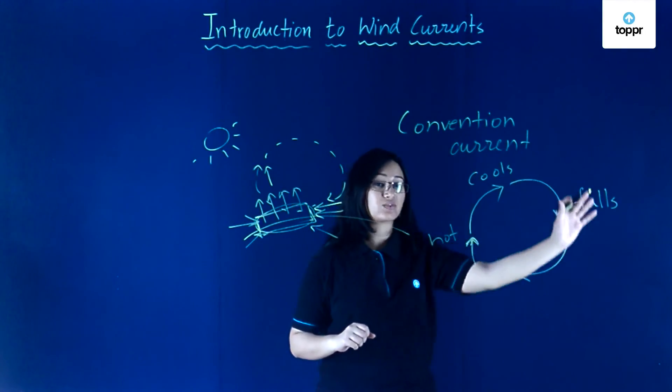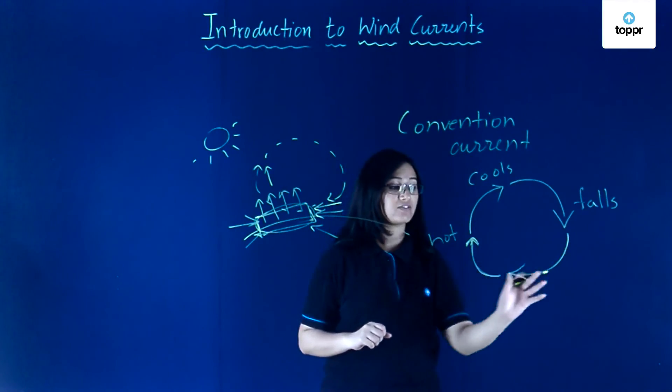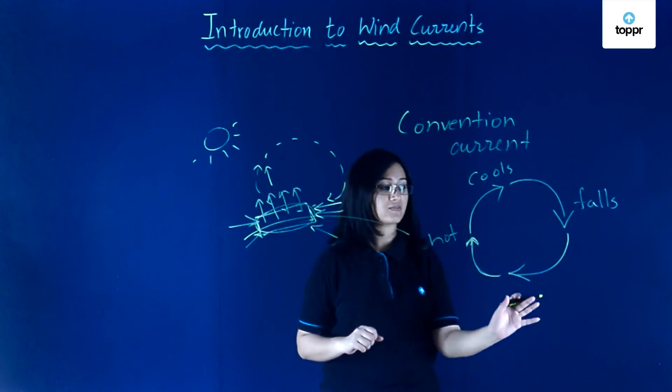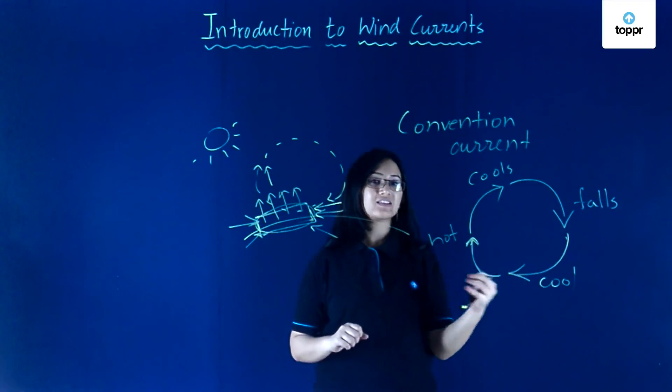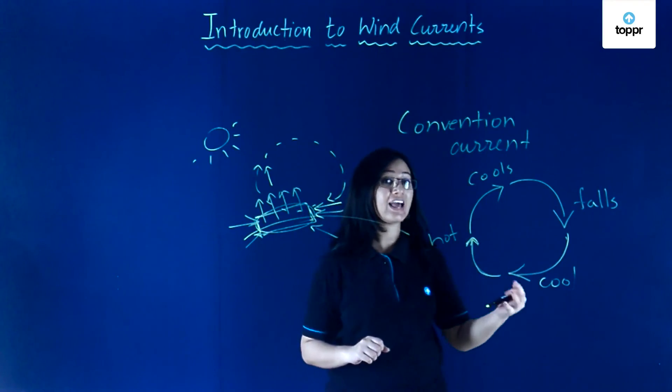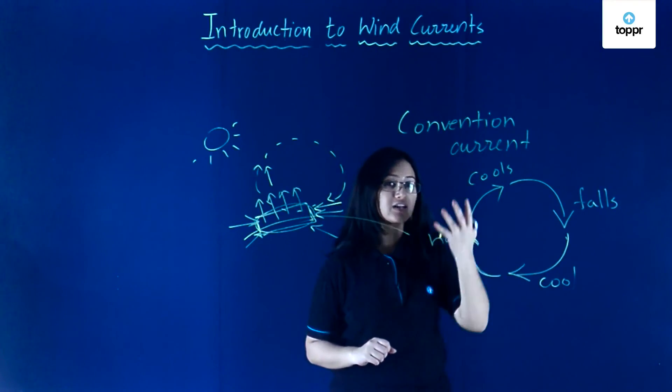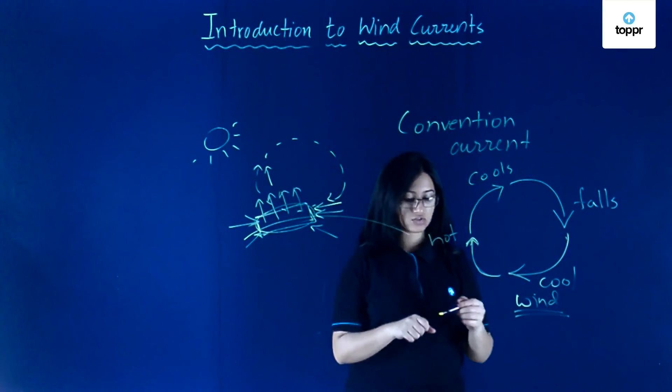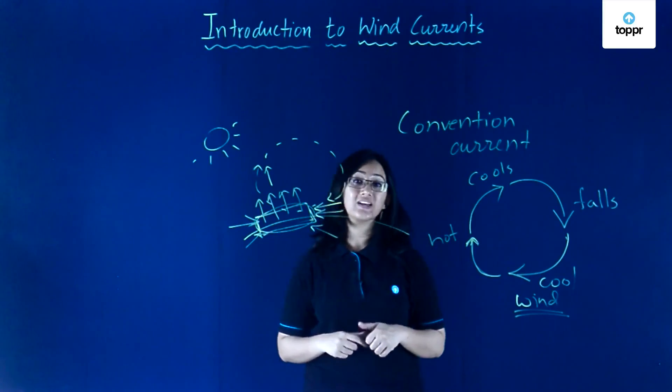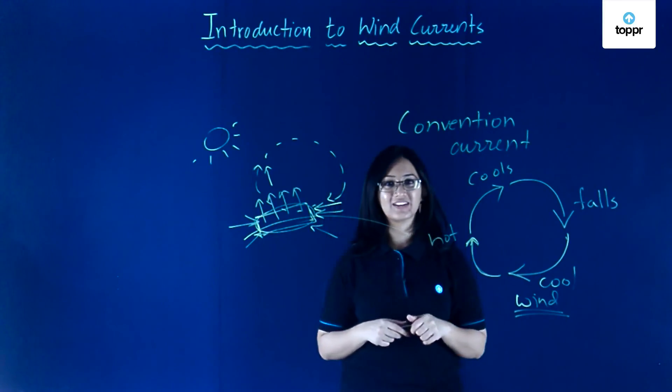So this circle that we have, or the cycle that we have, is called a convection current, and the cool air, once it rushes in to replace the low pressure area left behind by the hot air rising up, is what we call wind. So the flow of air is what we call wind, and that is how winds are created.